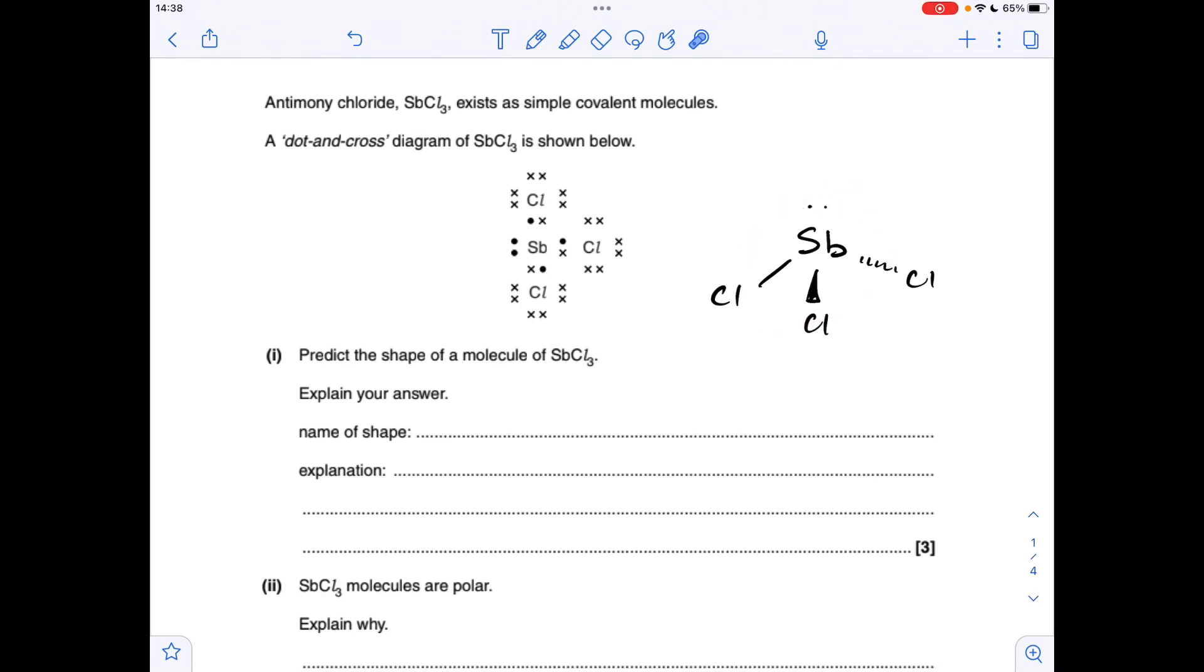So you'll notice I've drawn a shape diagram for this SbCl3 molecule, so hopefully you can appreciate the shape is going to be pyramidal. So the reason we get that shape is we've got essentially four electron regions around that central antimony atom. One of them is a lone pair, three of them are bonding regions, and basically they repel each other.